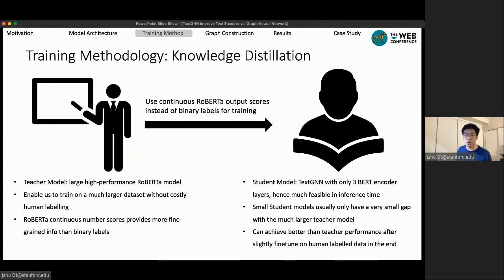This should provide more fine-grained information. Just imagine that a relevant score of 0.9, 0.8, and 0.5 will all be concluded as positive examples, but definitely from the model outputs, it contains different levels of relevance. So we use this continuous score to train the much more compact student TextGNN model.